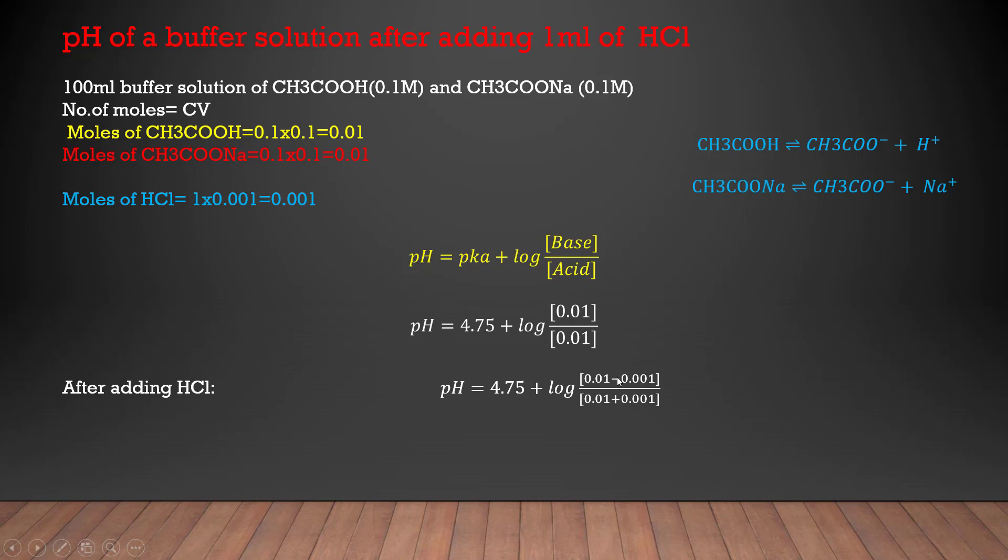In the denominator HCl adds into it as the amount of acid has increased. That is why we have subtracted 0.001 from the numerator and added 0.001 in the denominator. After doing the arithmetic we get this term right over here and simply dividing it we get 0.8.